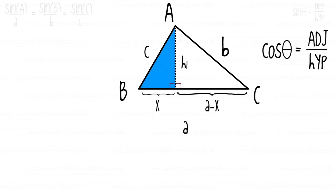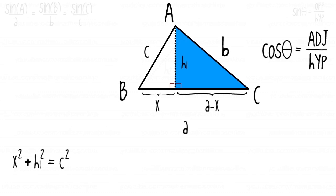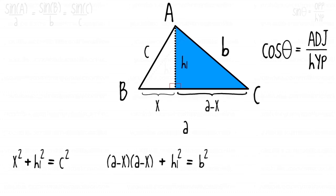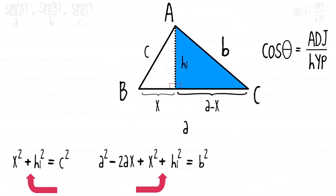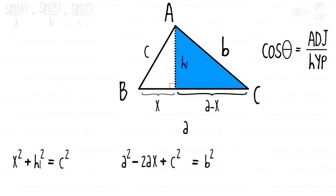By the Pythagorean theorem, the sides of the highlighted right triangle have the relationship x² + h1² = c². Looking at the other right triangle, we have (a − x)² + h1² = b². We simplify the second equation: (a − x)² becomes a² − 2ax + x². Now remembering that x² + h1² = c², we can substitute c² into the second equation.